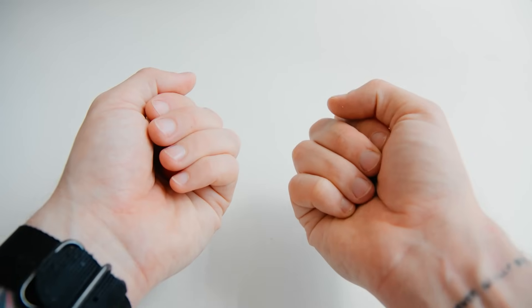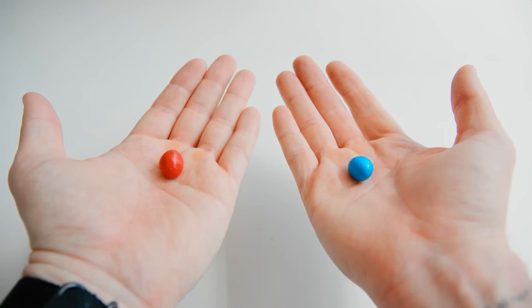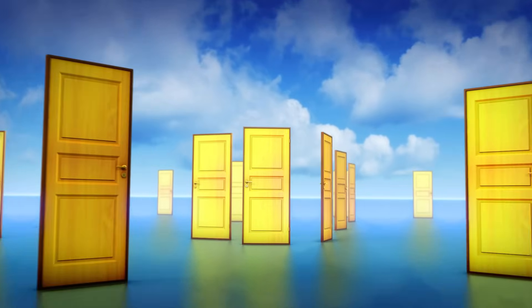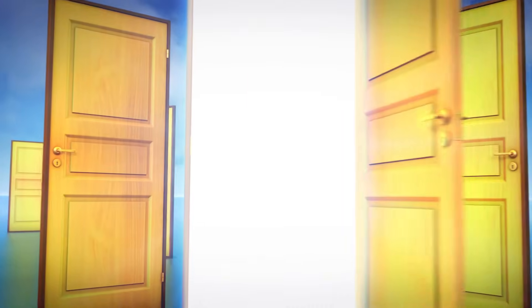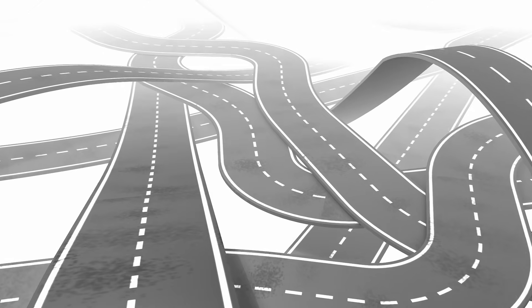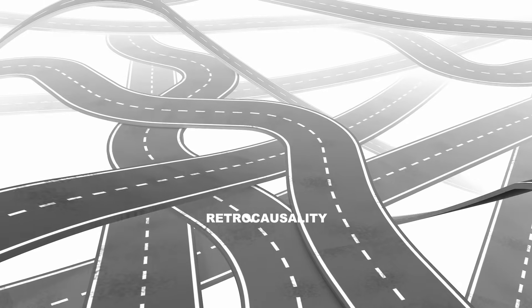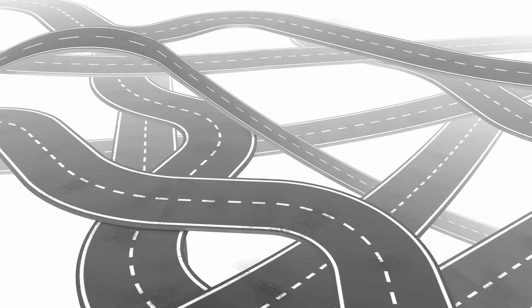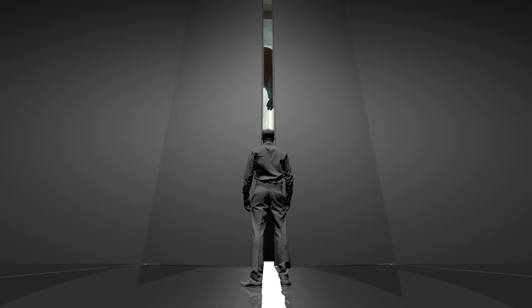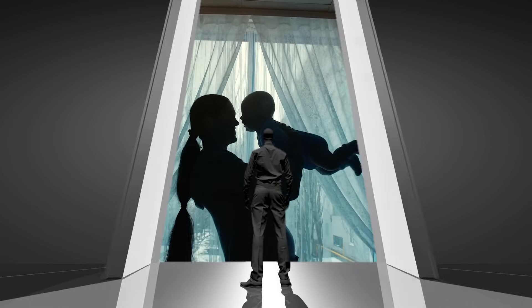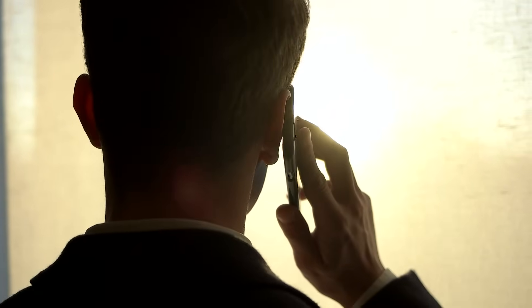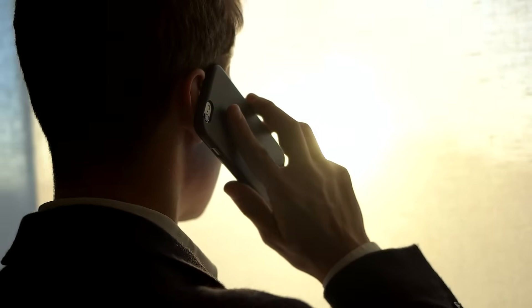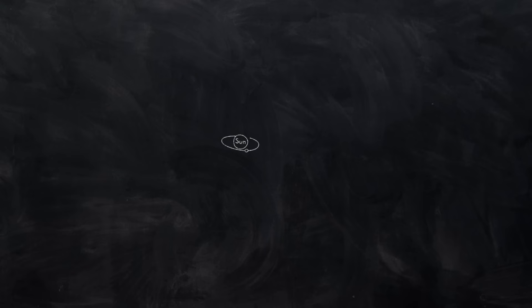This leads us to a fascinating possibility. What if our perception of making choices in the present is actually shaping the future retroactively? It's like Schrodinger's cat, but instead of a cat in a box, it's your entire future life, existing in a superposition of states until you collapse the wave function by living it. Some physicists have even proposed more radical ideas like retrocausality, the notion that future events can influence the past. Imagine a universe where cause and effect are more like a cosmic dance than a linear progression. Your future self might be reaching back through time, subtly influencing your present decisions. It's like getting life advice from your future self, but instead of a phone call, it's through quantum entanglement.